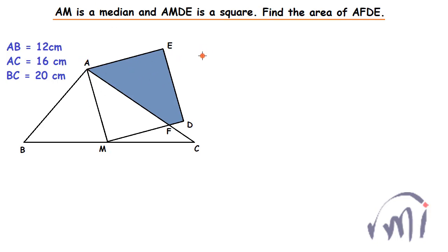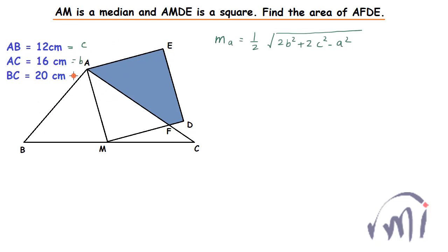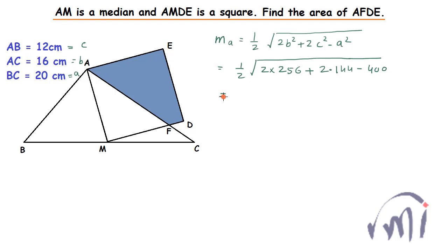First, let's find the length of the median AM. The formula for the median from point A is equal to half of the square root of 2b squared plus 2c squared minus a squared. Here AB equals c, AC equals b, and BC equals a. So this will be equal to 1/2 times the square root of 2 times 256 plus 2 times 144 minus 400, which equals half of the square root of 400, that is 20 divided by 2, giving AM equal to 10 centimeters.